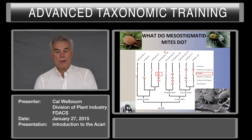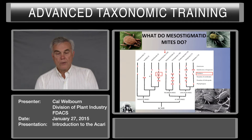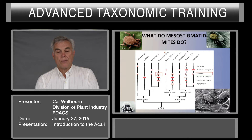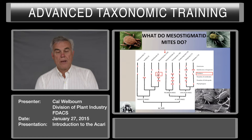What do Mesostigmata mites do? There are some that are detritivores and fungivores. Many are parasites of vertebrates, many are parasites of arthropods, and many are predators. As stated previously, the family Phytoseiidae is the main predator mite on plants.